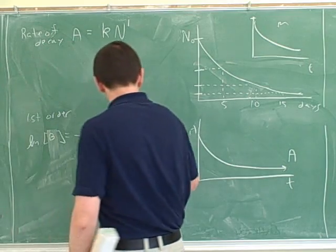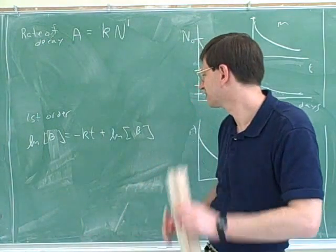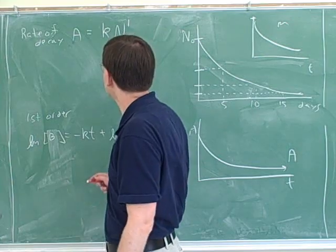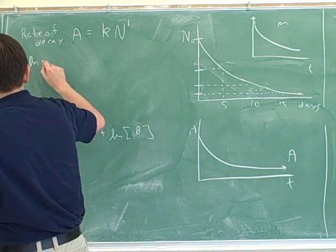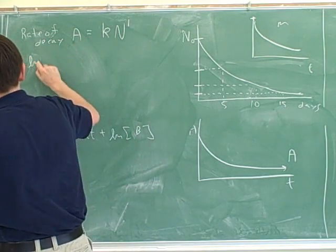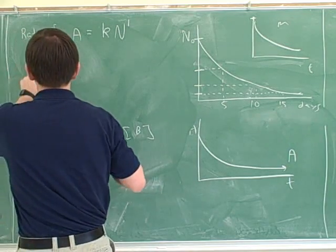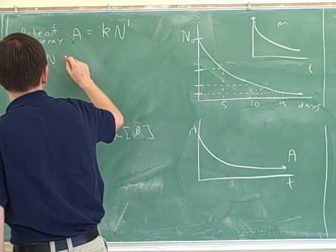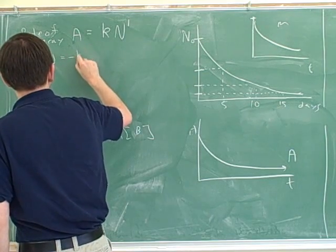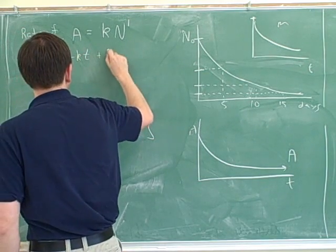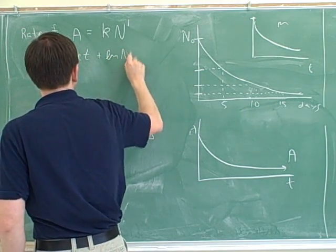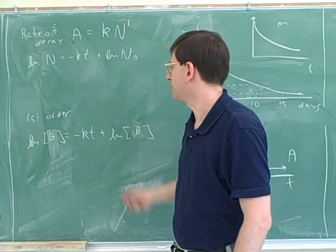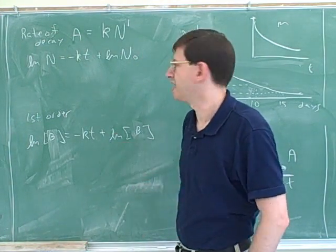We'll use B for the amount of the substance. We can apply that here. We won't use concentrations — we'll use amounts. The natural log of the amount that's left equals negative kt plus the natural log of the original amount, using the idea of first order integrated rate laws.